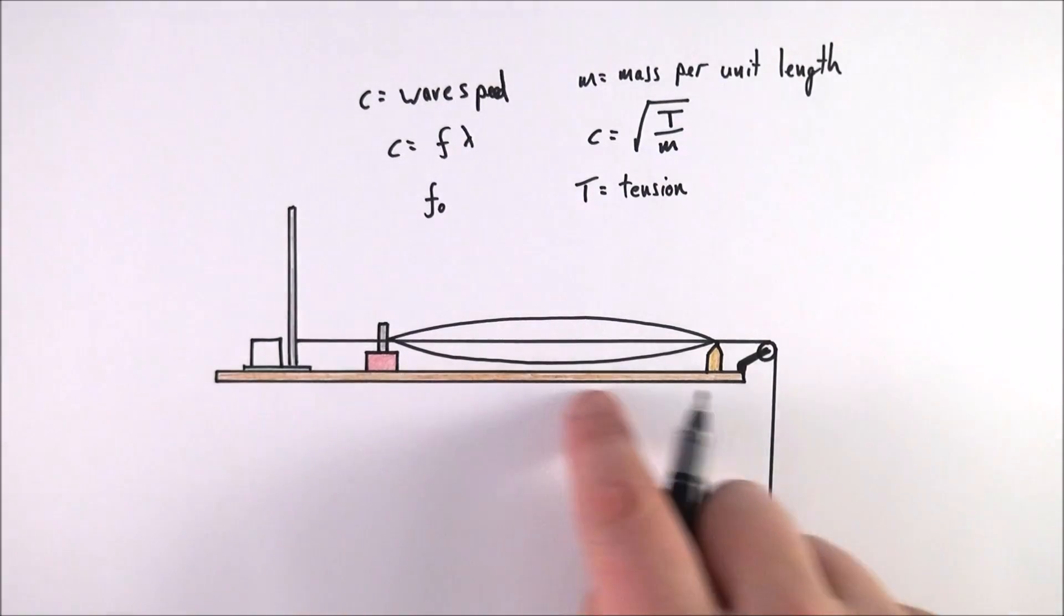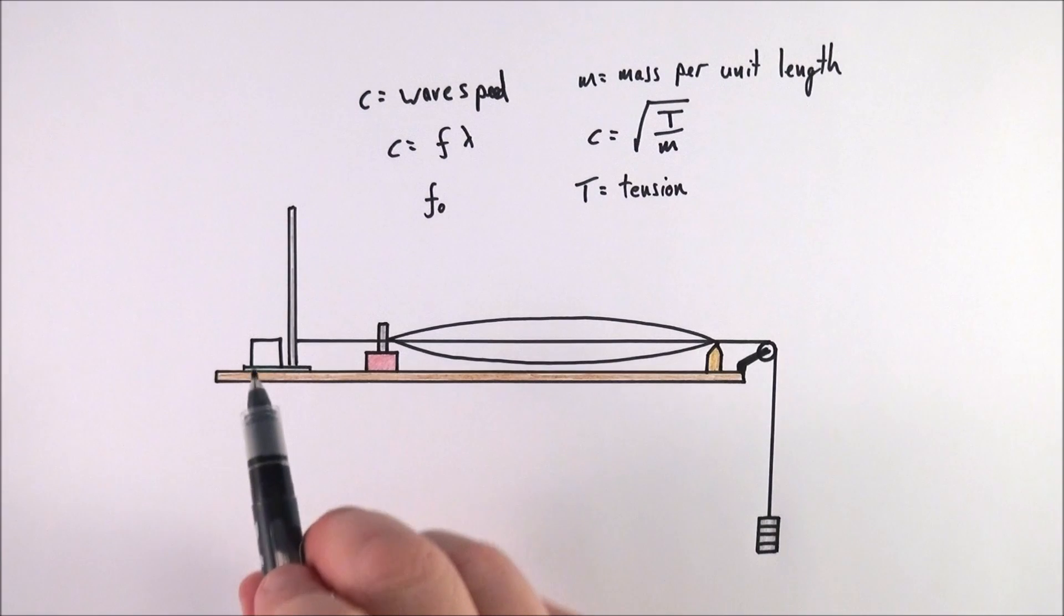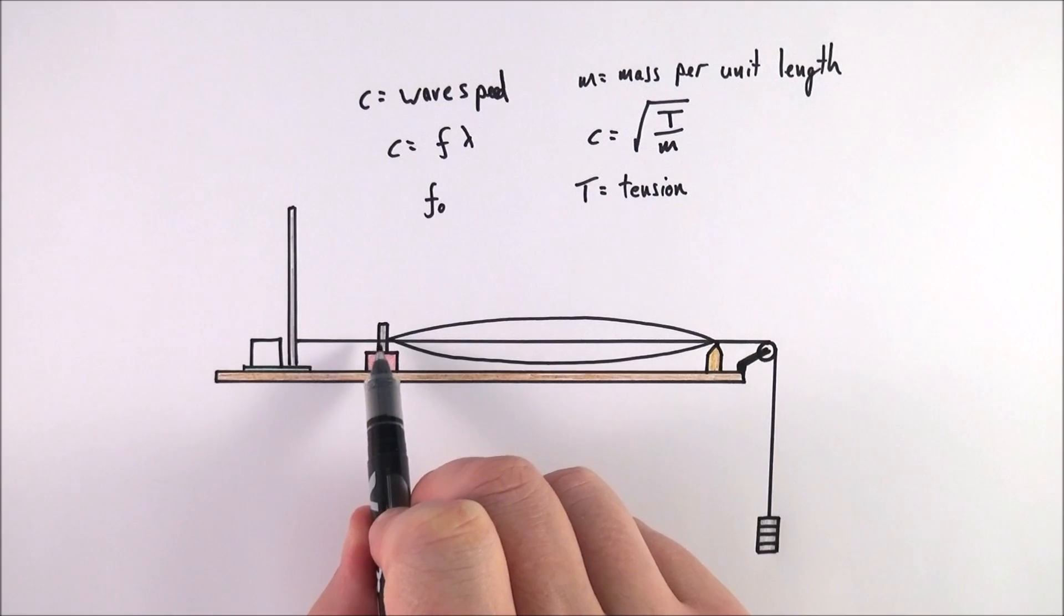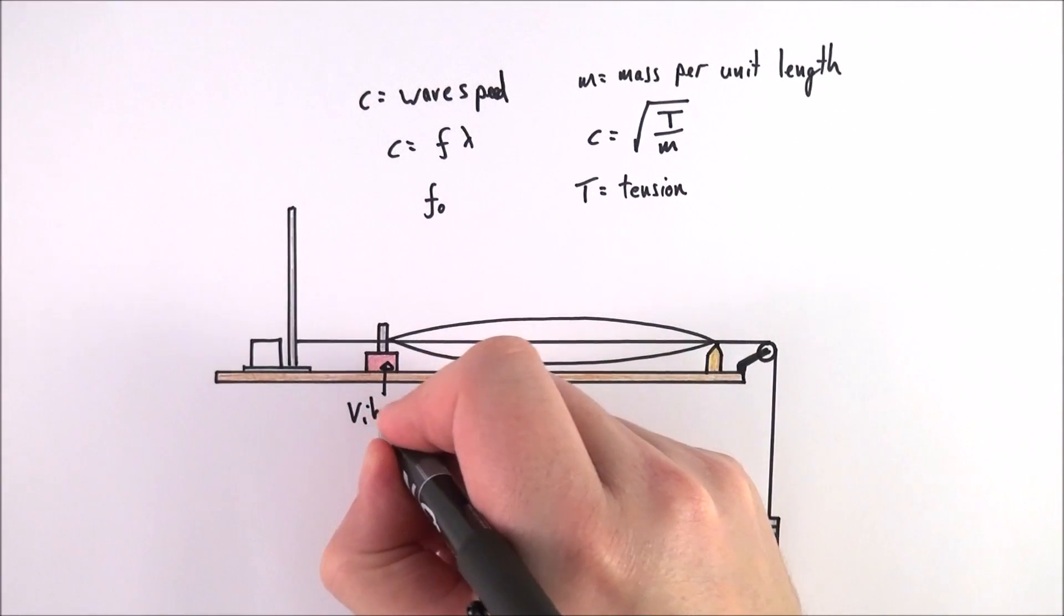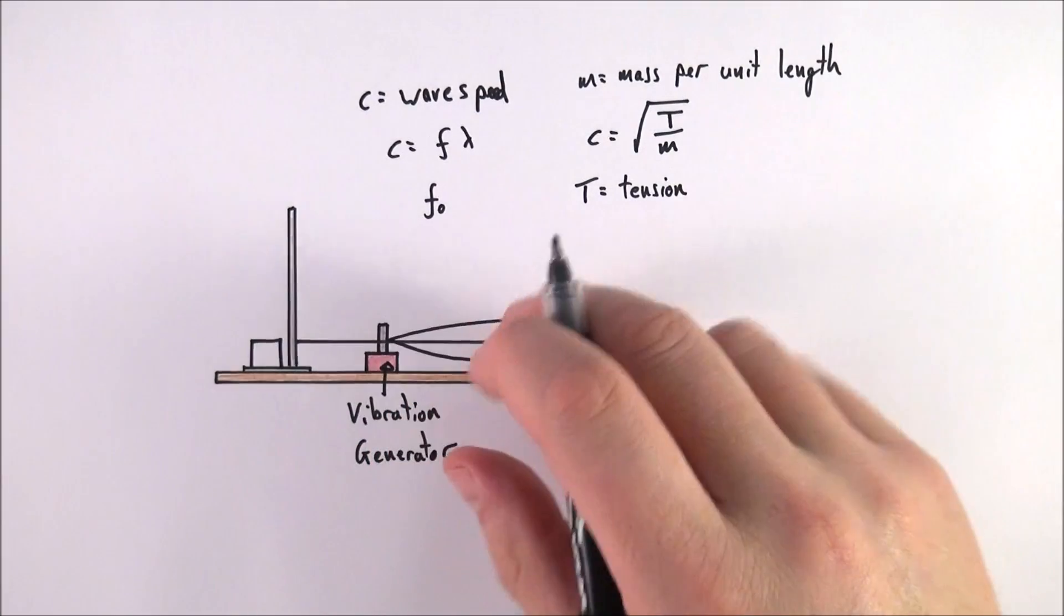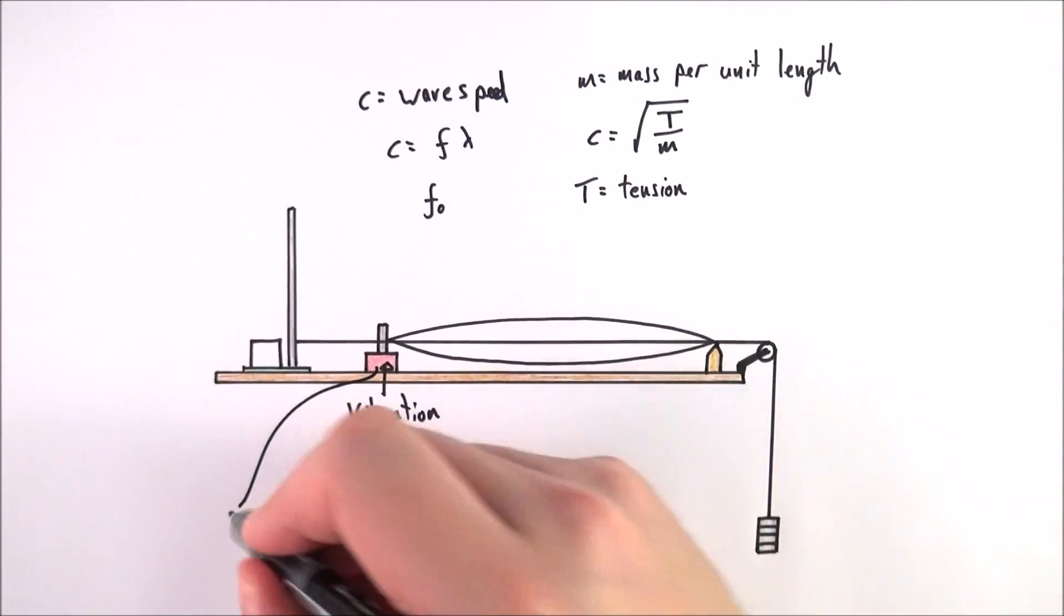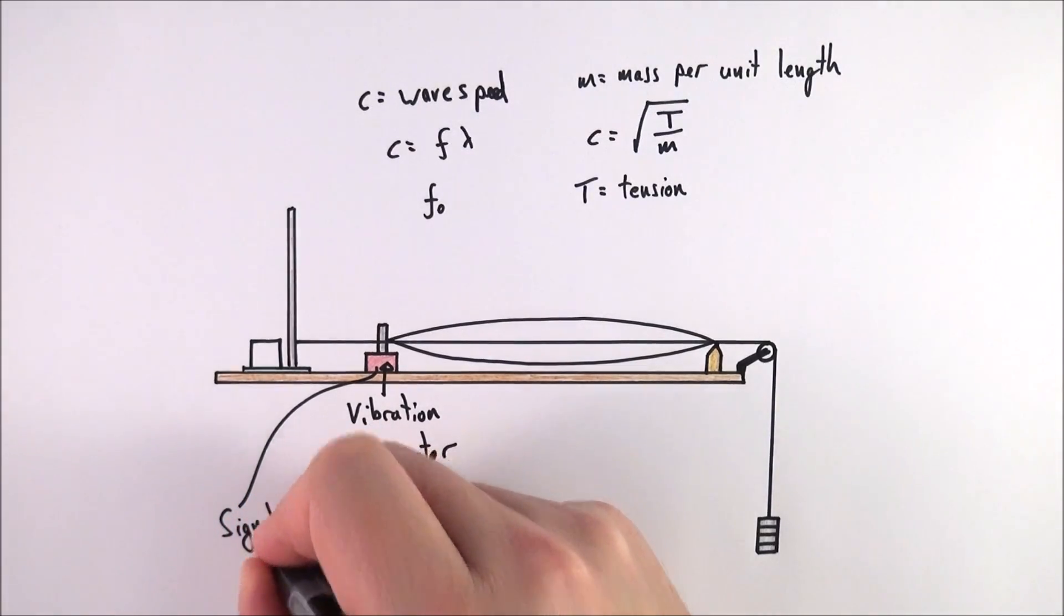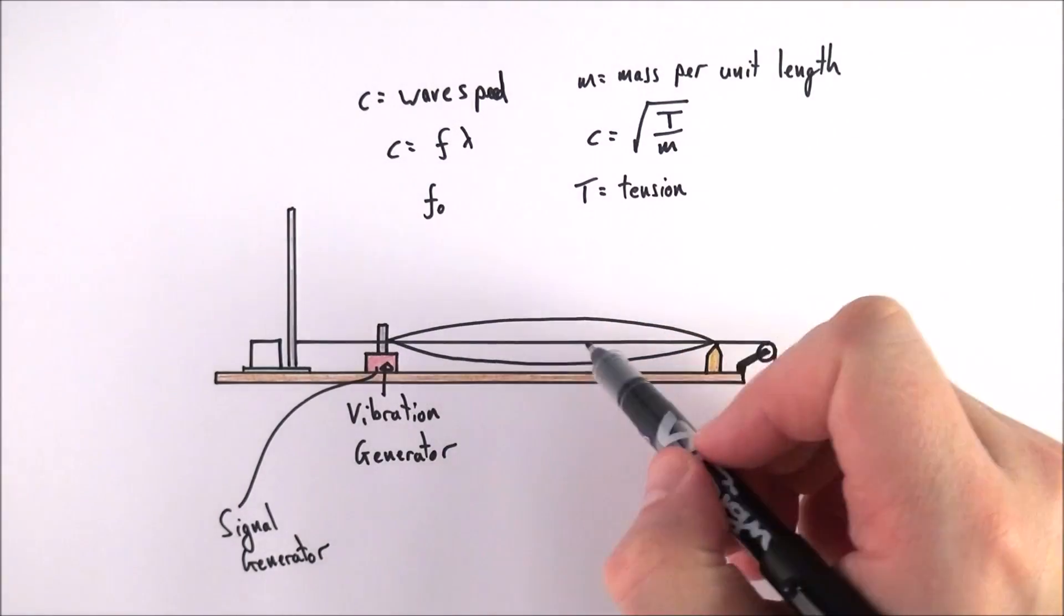Going away from that, we have a string. The string should be tied onto the retort stand and then it gets passed through a very small hole in the middle of the vibration generator. The vibration generator moves up and down and is attached by wires to your signal generator. By controlling this, we can make it move up and down, which causes the string to go up and down as well.